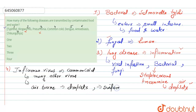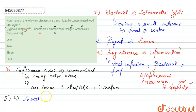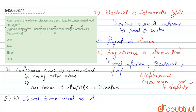The next options are dengue and chikungunya. Both dengue and chikungunya are insect-borne viral diseases. They are spread through the biting of a mosquito called Aedes aegypti. So these are also not transmitted by contaminated food and water.